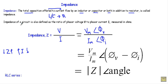We can also define the impedance of a circuit in terms of phasor voltage and phasor current. Impedance is also defined as the ratio of phasor voltage V to phasor current I. That means impedance Z equals the ratio of phasor voltage V to phasor current I. If we have an alternating voltage V equal to Vm sin(ωt + φV), with initial phase φV and maximum value Vm...